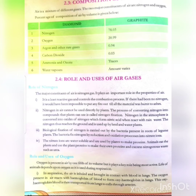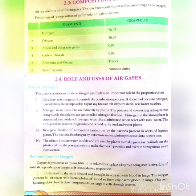The second point is nitrogen in air cannot be used directly by plants. Nitrogen is a very important constituent of nutrition as well. Plants cannot directly use the nitrogen present in the atmosphere. The process of converting nitrogen into a compound that plants can use is called nitrogen fixation. Nitrogen in the atmosphere is converted into oxides of nitrogen, which form nitric acid when they react with rain water. The nitrogen thus reaches the ground and is used by land and water plants.